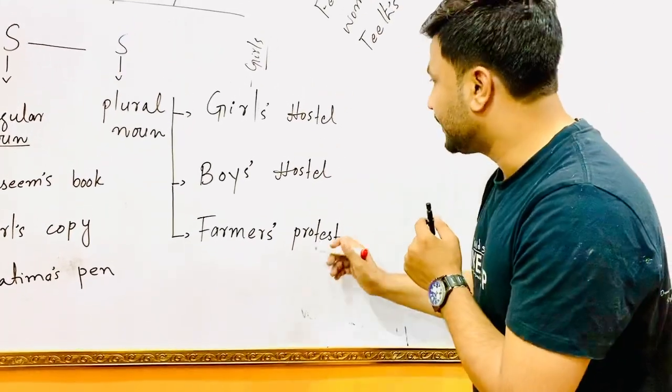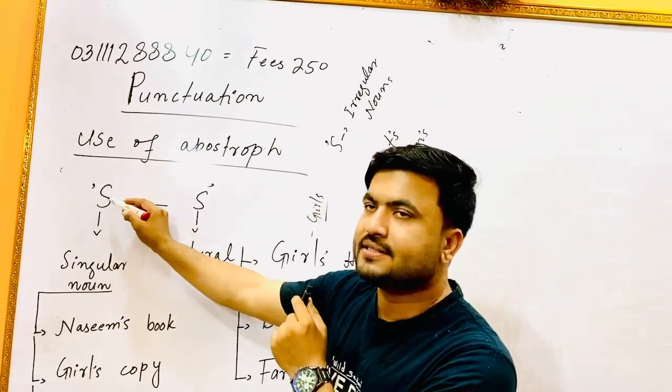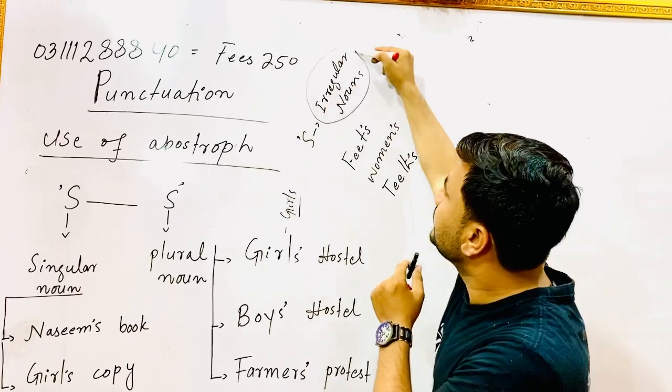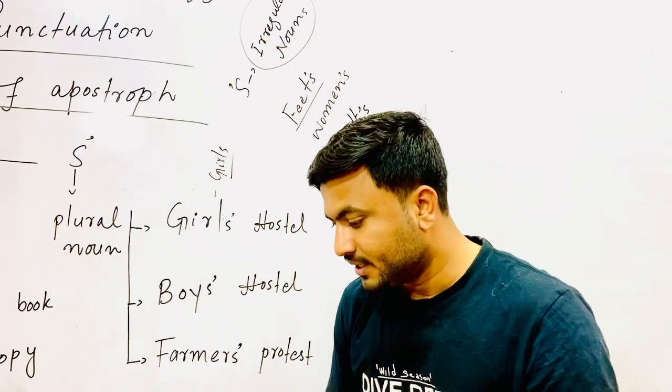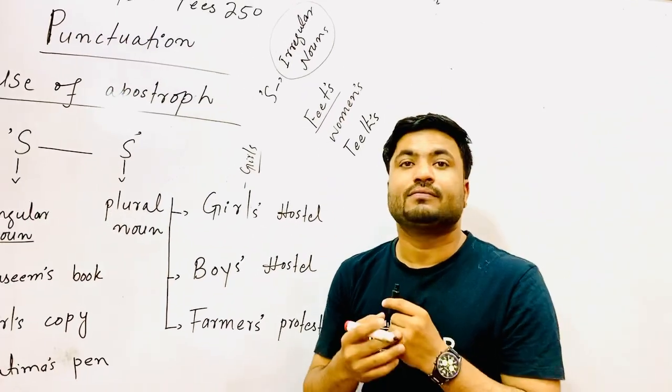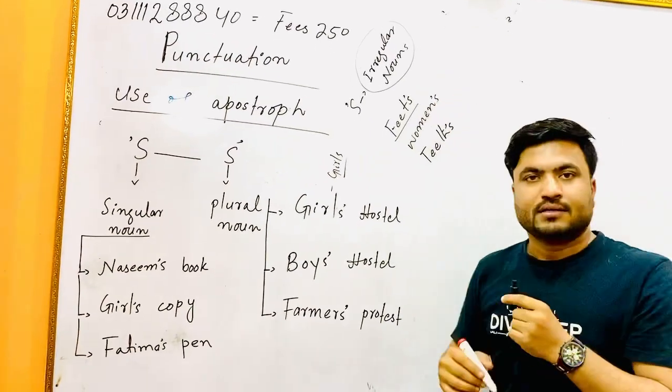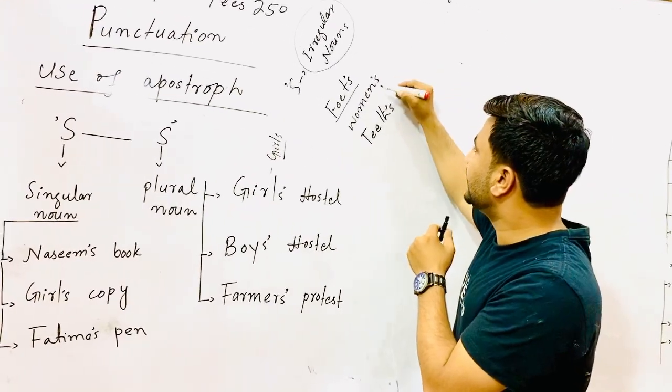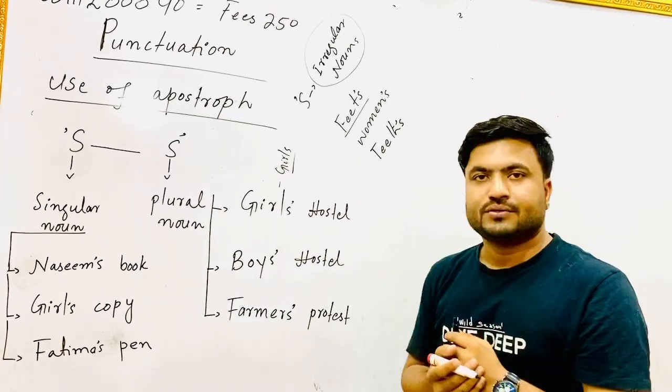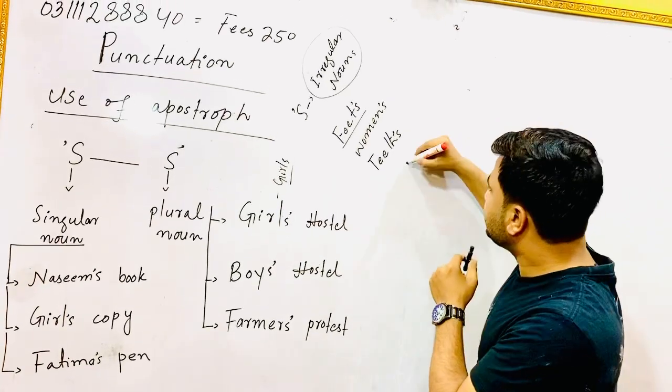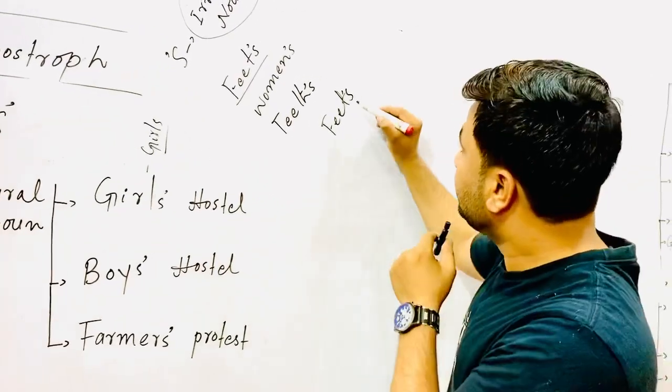Apostrophe 's' is also used with irregular nouns. For example, feet - feet's apostrophe then 's'. Women - women's apostrophe then 's'. Teeth - teeth's apostrophe then 's'. If you use like this to show possession of feet, this is wrong because it is an irregular noun.